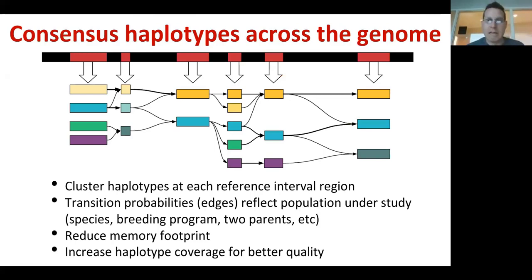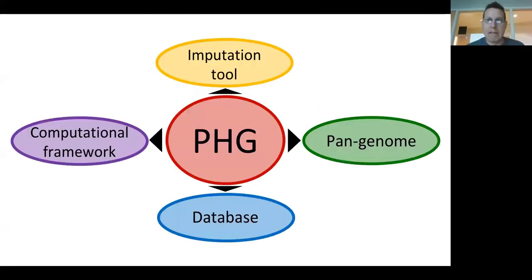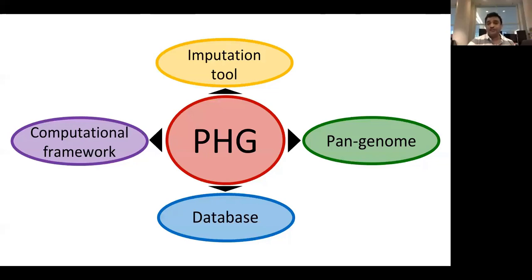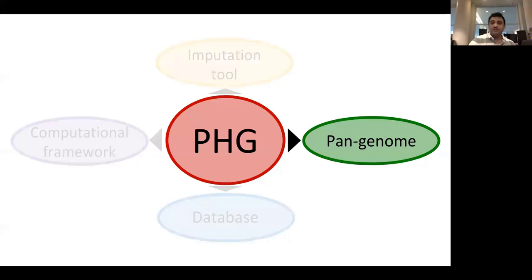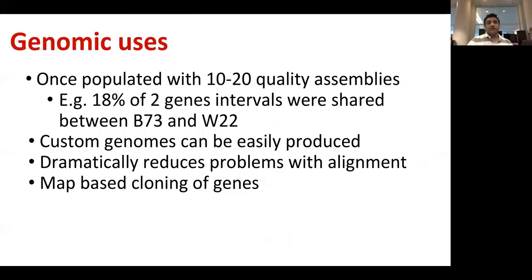Once you develop the Practical Haplotype Graph in a species, the PHG can be used for any purpose: for genomics, like a pan genome; as a database to store a lot of information; as a computational framework; and for genotyping or imputation. I will go through each one. As a pan genome, it can be used for genomic purposes.